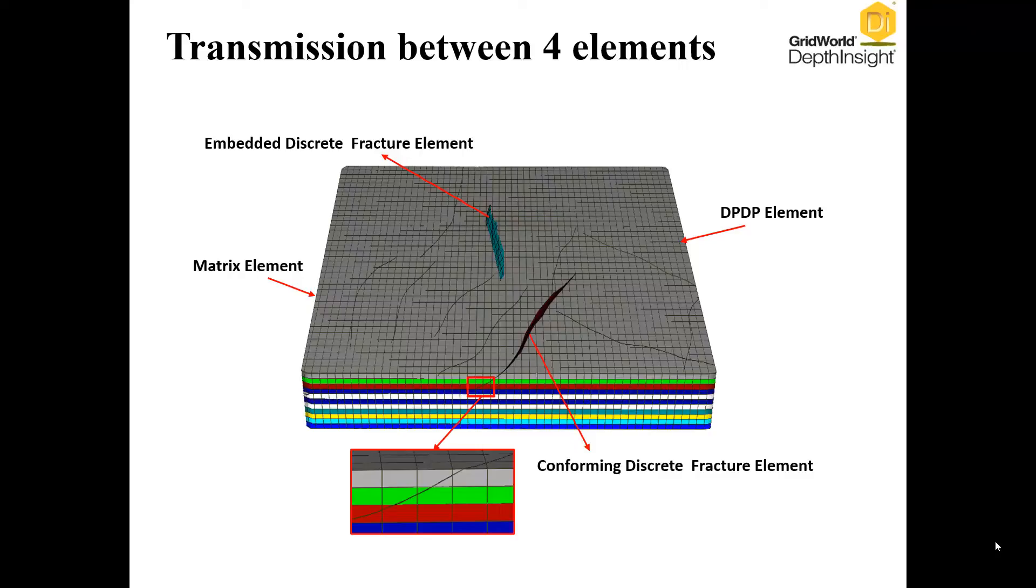Every two different elements have flow exchange and their own transmissibility. We can export grids and related files for dynamic simulation.